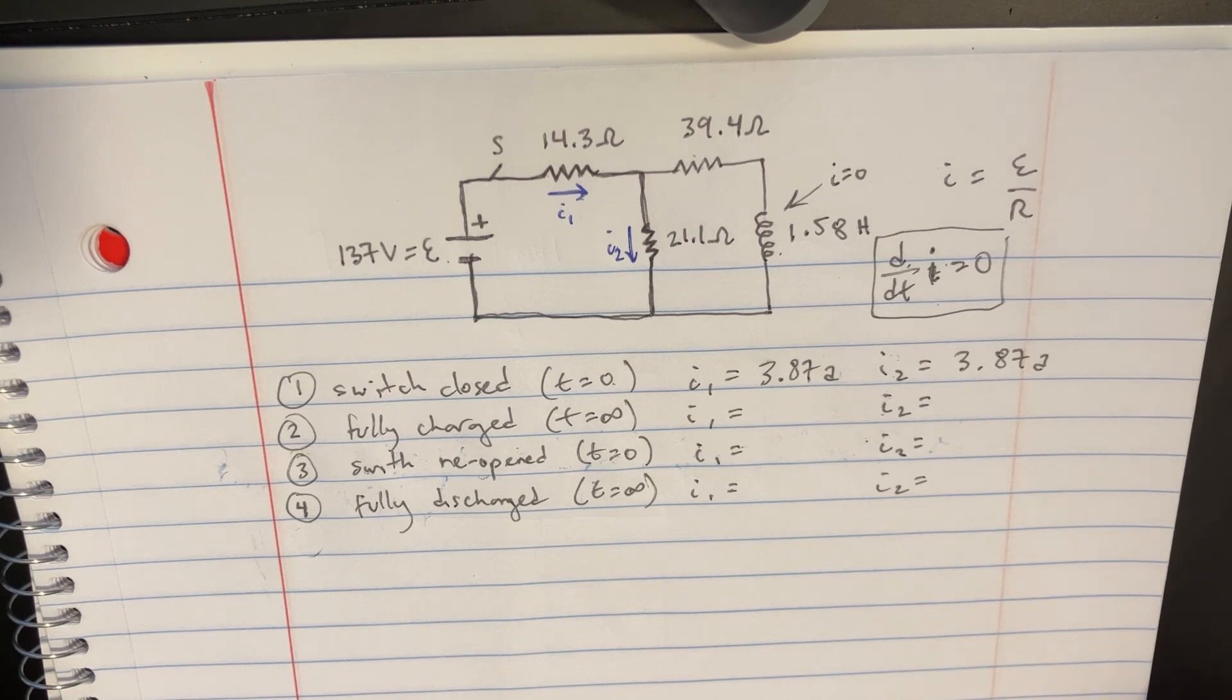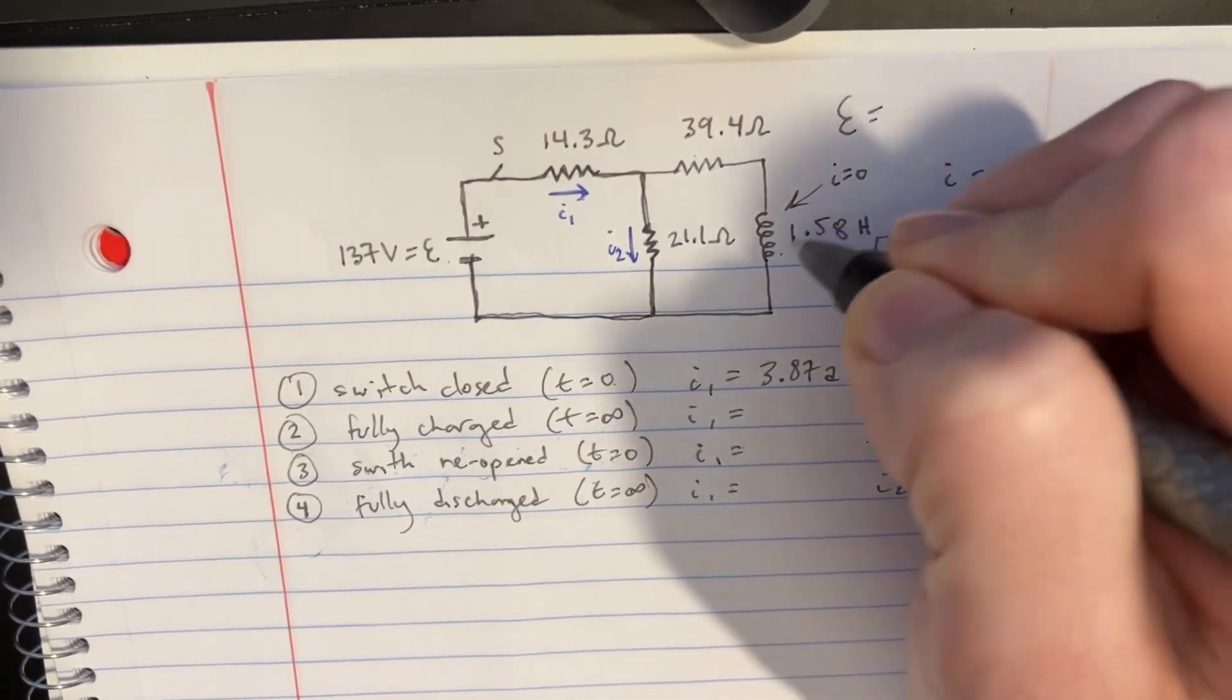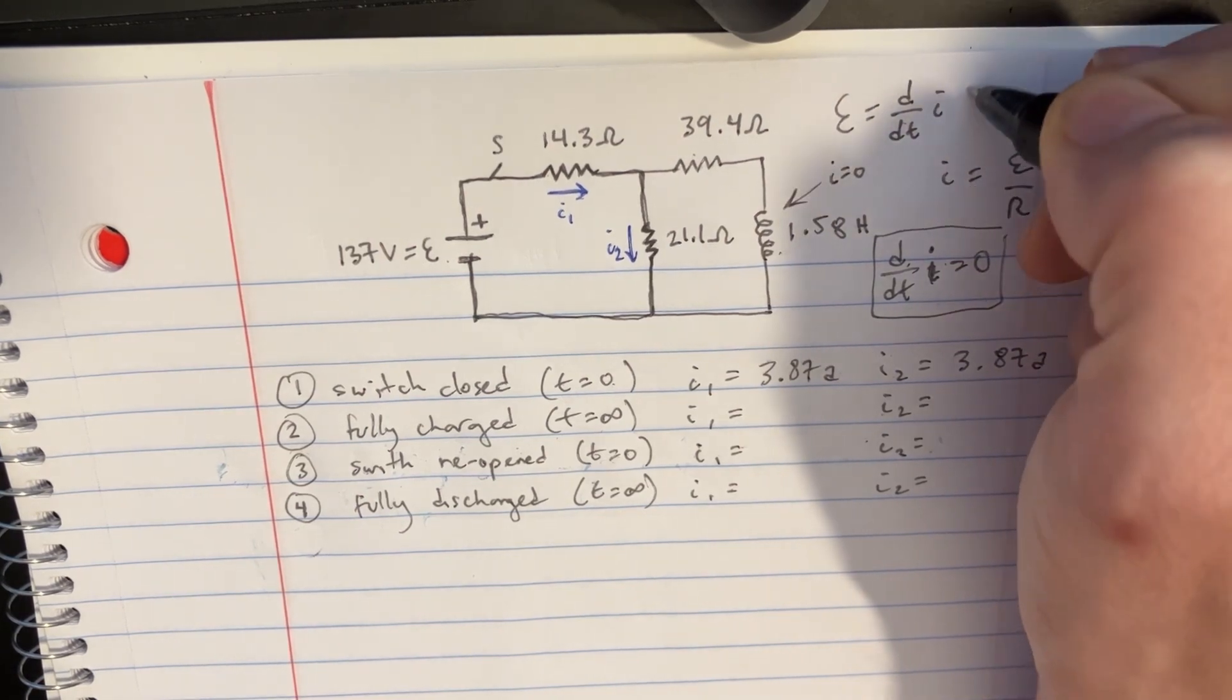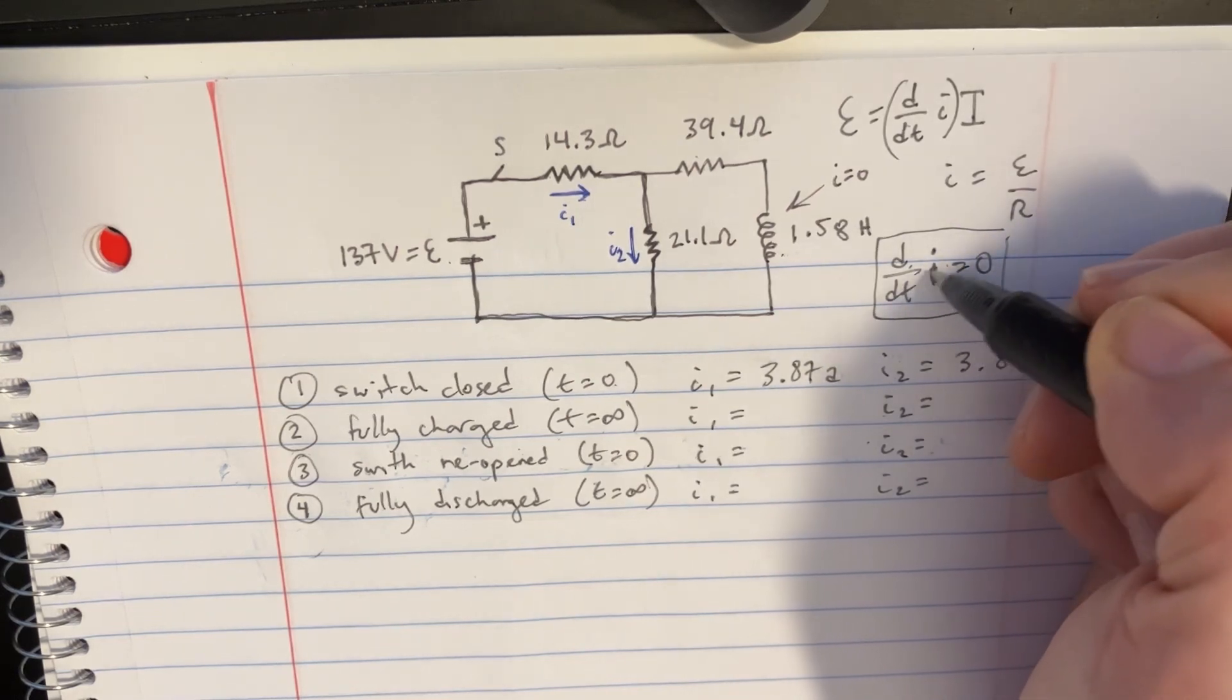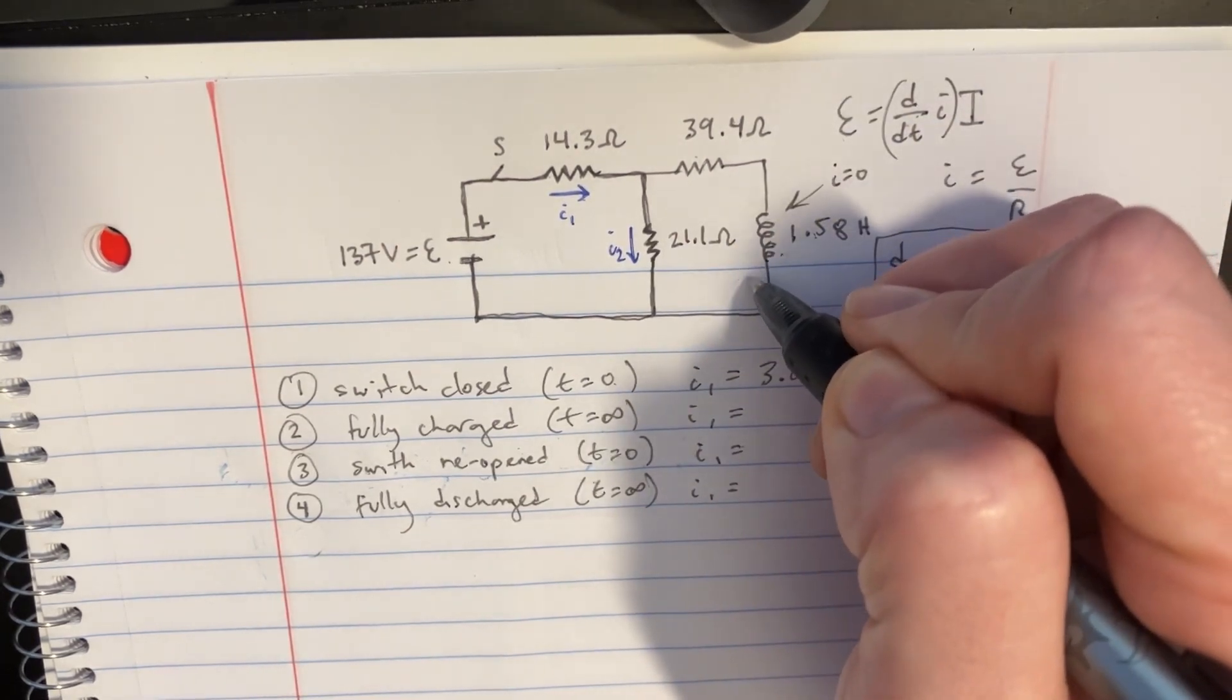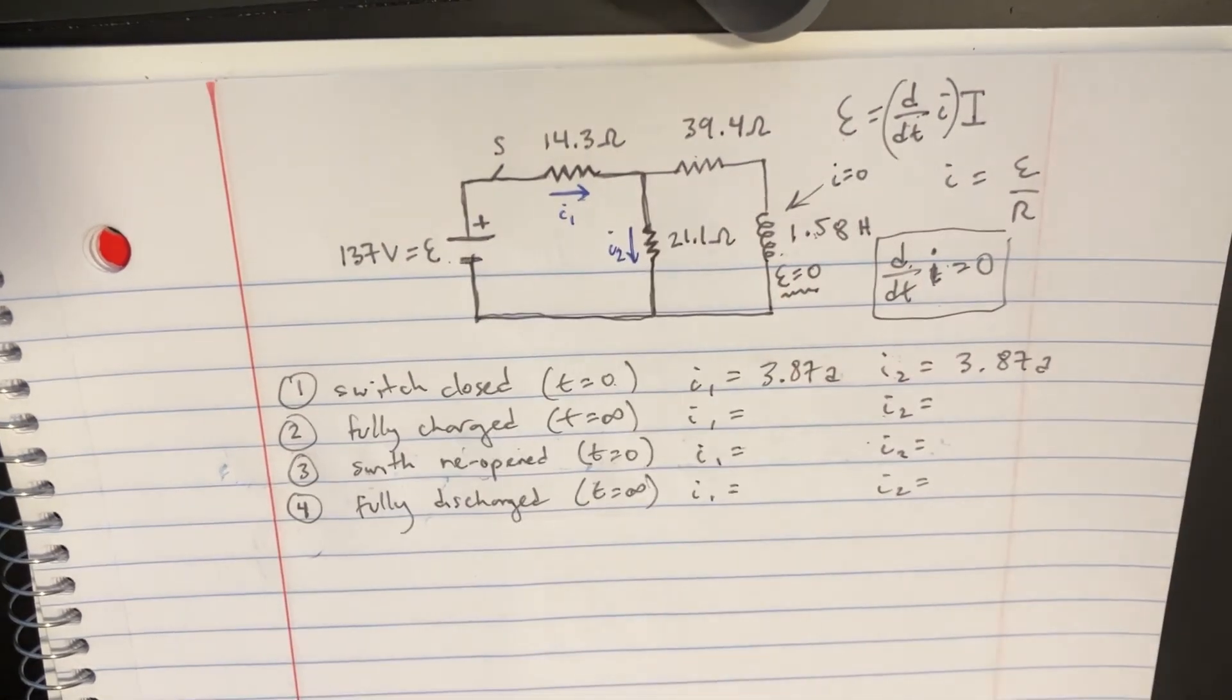Well, this question is a little bit harder. We can ask ourselves, what is the EMF through the inductor at that point? Because we know it's supposed to be dI/dt times the inductance. But because dI/dt is 0, that doesn't really matter what the inductance is. The epsilon, or the EMF here, is still going to be 0. So the EMF is 0 once the thing is fully charged. Because the EMF is 0, now we can create two Kirchhoff loops in here.